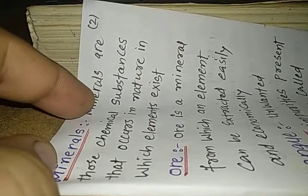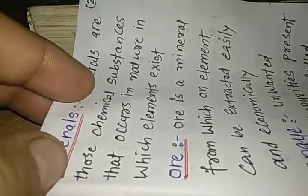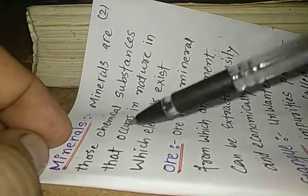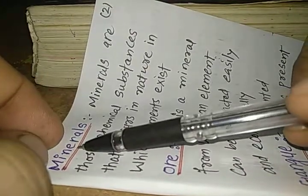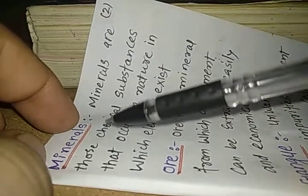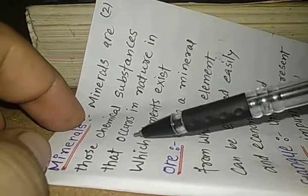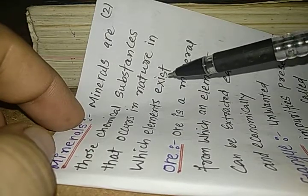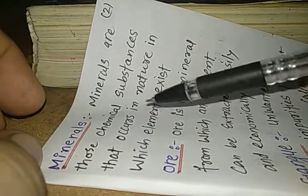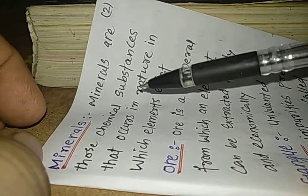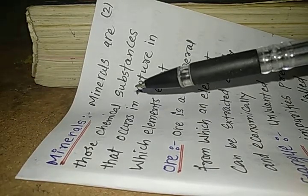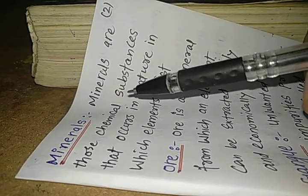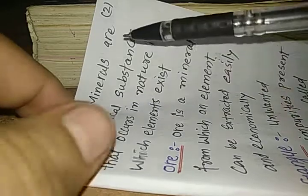Now, we shall know about some of the terms that are related to the extraction of metal. The first term is known as the minerals. So, minerals are those chemical substances that occurs in nature in which elements exist. So, various elements exist as their compound into the earth's crust. These all compounds of a particular element are known as the minerals of that particular compound.